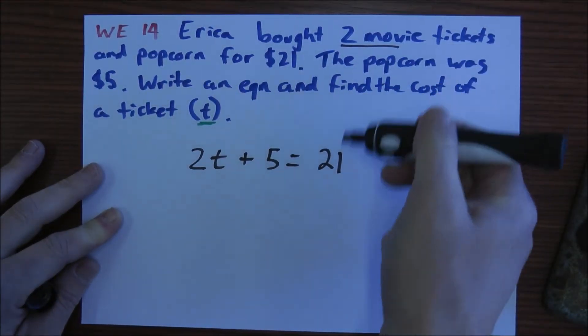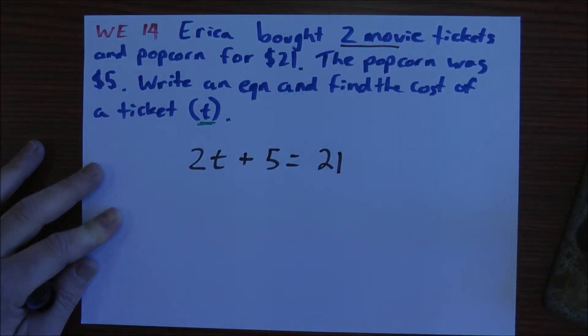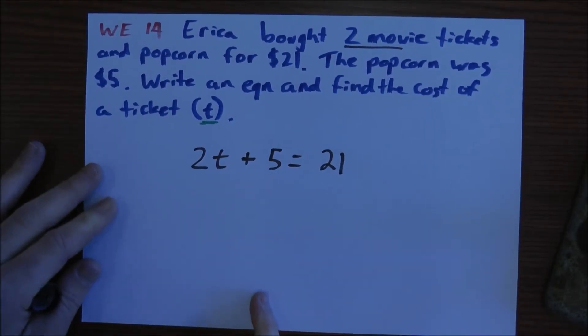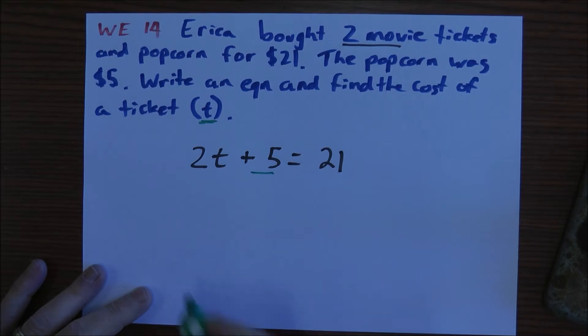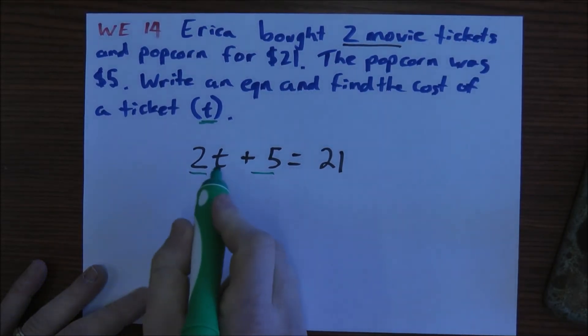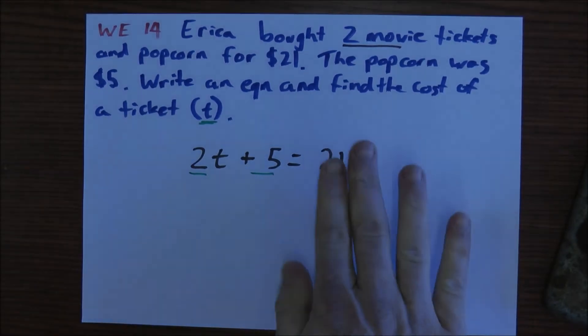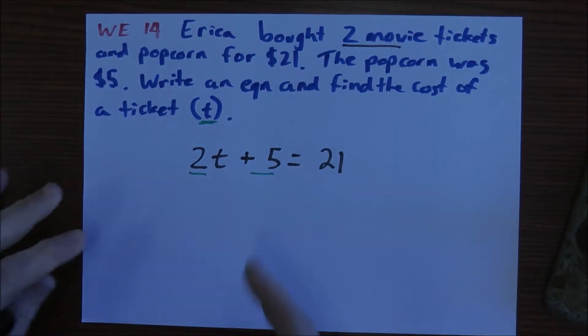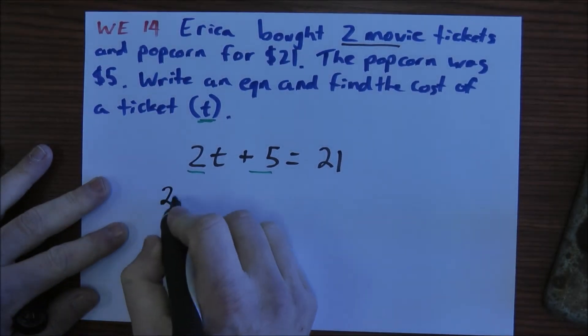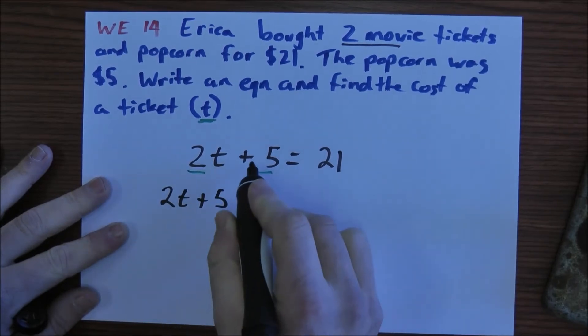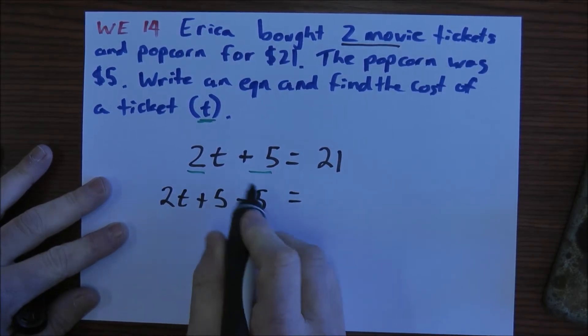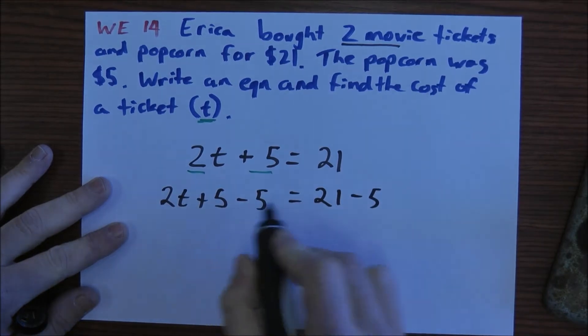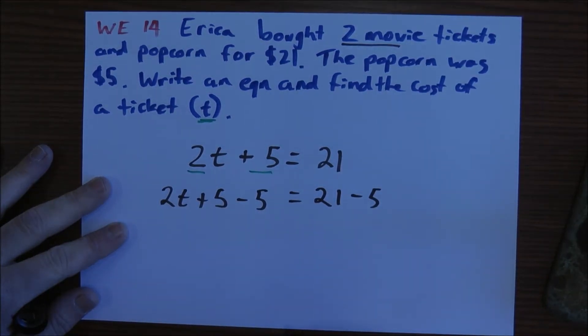2T plus 5 equals 21. So we've written this words into an algebraic equation in more of a mathematical form. Now we've got to solve it. When we solve these sorts of questions, we go through a certain sequence. We deal with this number here on the end first. Then we deal with the 2. And that will leave us with T on its own on this side, on the left hand side. And all the numbers will be over here on the right hand side. So I'm going to deal with the 5 first.